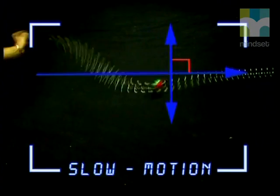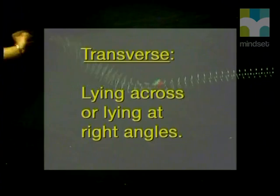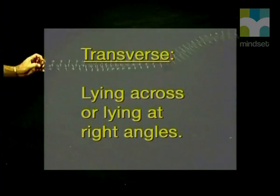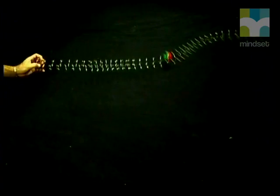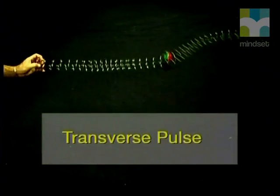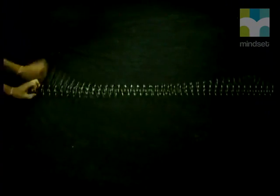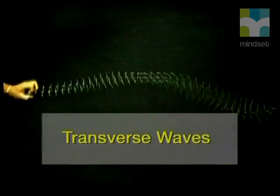To describe this unusual motion, we use the word transverse, which means lying across or lying at right angles. So this type of pulse is called a transverse pulse. The waves in the slinky we have studied have all been made up of transverse pulses, so they are called transverse waves.